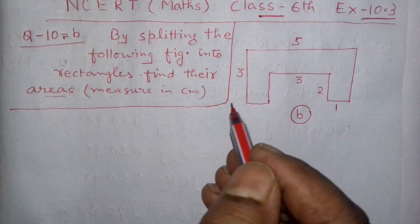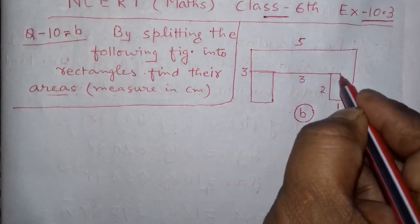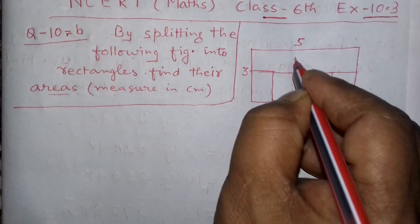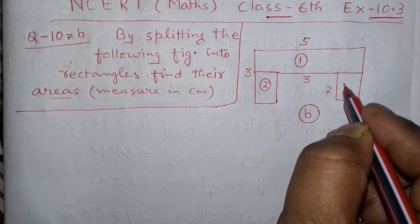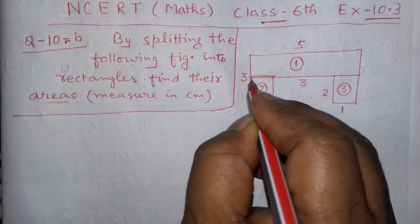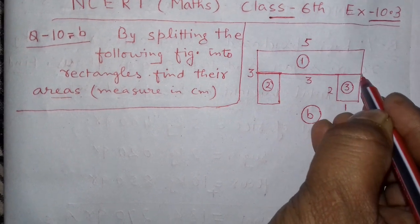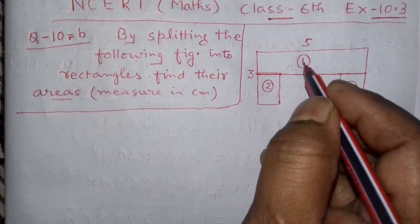You see this figure. First we divide this figure into three parts. This is part number 1, this is part number 2, and this is part number 3. We are going to find the area of each part. First we have divided this figure into 3 parts.